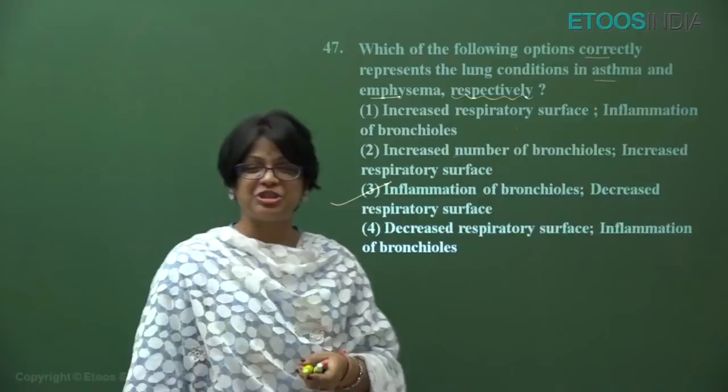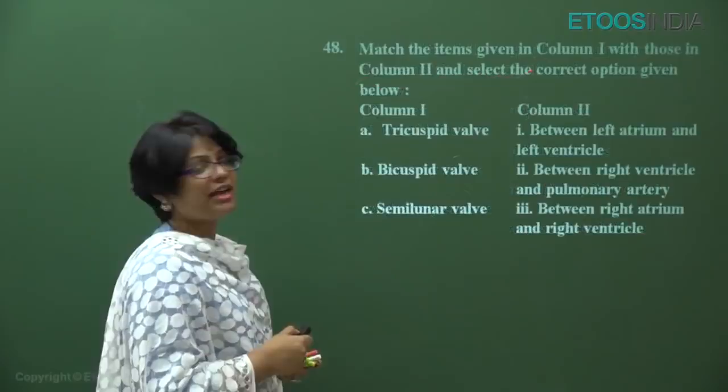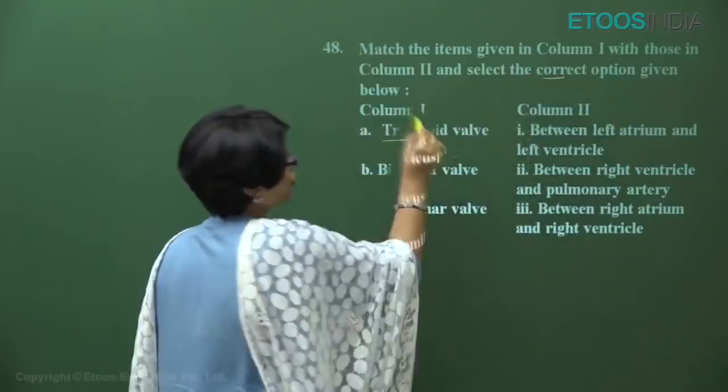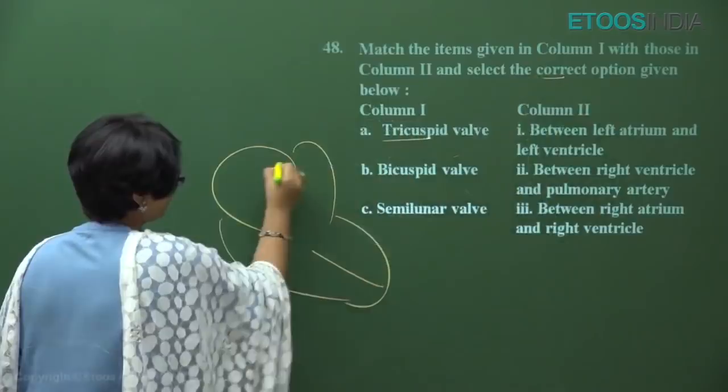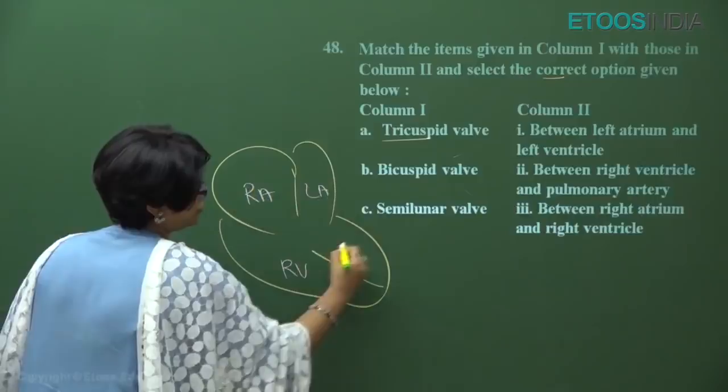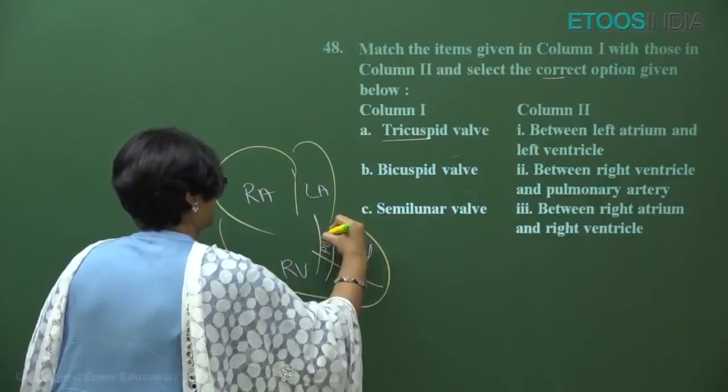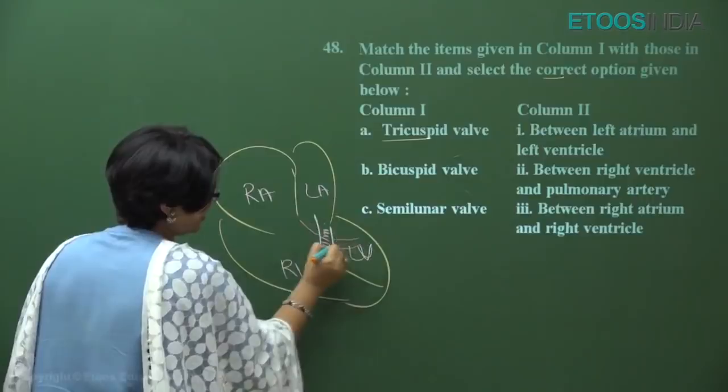Next question from NEET 2018: match the heart valves. Drawing a rough diagram of the heart — there are two atria and two ventricles: right atrium, left atrium, right ventricle, left ventricle. From the right ventricle, the pulmonary artery goes to the lungs carrying deoxygenated blood, and from the left ventricle the aorta arises.